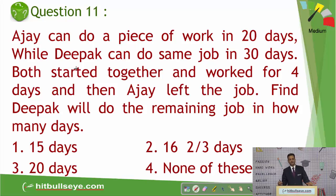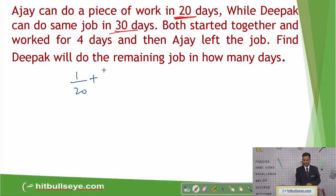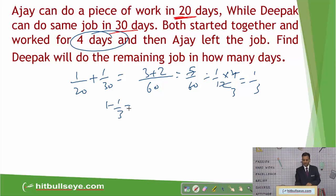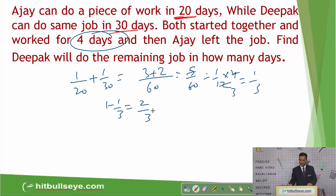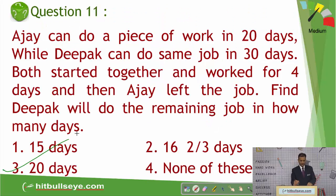Next question is from time and work: Ajay can do work in 20 days, Deepak in 30 days. Together their one-day work is 1/20 + 1/30 = 5/60 = 1/12. They work together for 4 days completing 4/12 = 1/3 of the job. Remaining work is 2/3. Ajay left the job; Deepak alone can do the full job in 30 days, so he takes 30 × 2/3 = 20 days to complete remaining work. Answer is the third option.